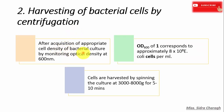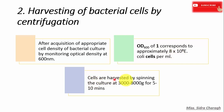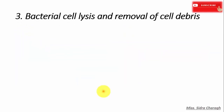The second step is harvesting of bacterial cells by centrifugation. After acquisition of appropriate cell density of bacterial cell culture, we monitor the optical density at 600 nanometers. An optical density at 600 of 1 corresponds to approximately 8 × 10⁸ E. coli cells per ml. We then harvest the bacterial cells by spinning the culture at 300 to 800 × g for 5 to 10 minutes.